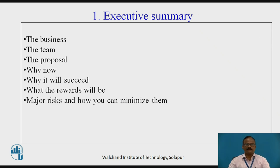First is executive summary. You should be alert and mindful while writing a summary. It should contain everything about the business. In a couple of pages, you have the opportunity to show the compelling reasons, motivation, and driving force. The business — what business, what is your product or service, what customer pain you are going to alleviate, the team, your team members, the proposal, your value proposition. Why now — relevance, big picture, technology. For example, if 5G is coming, businesses related to it represent a 'why now.' Why it will succeed, what the rewards will be — you must think about the reward for the investors, major risks, and how you can minimize them.